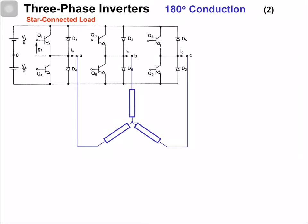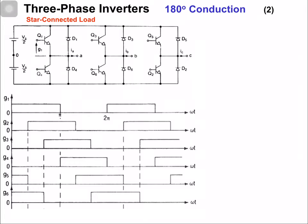In this video we are going to discuss three phase 180 degree conduction inverter with star and delta connected load. With star connected load, the circuit diagram is shown in front of you. The gating signals which are used for the 180 degree conduction inverter are shown here.